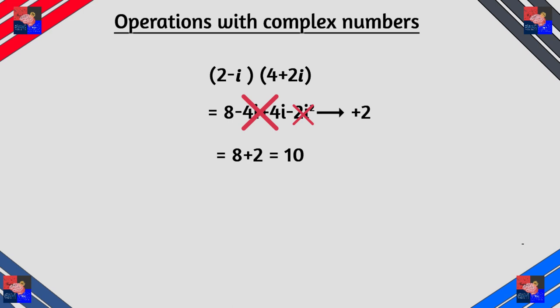So let's FOIL (2-i) times (4+2i). Now FOIL stands for first outer inner last. So the first is 2 times 4 that's 8. Inner, negative i times 4 that's minus 4i.